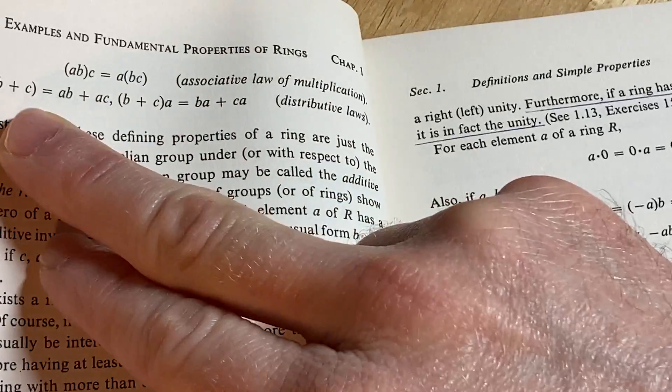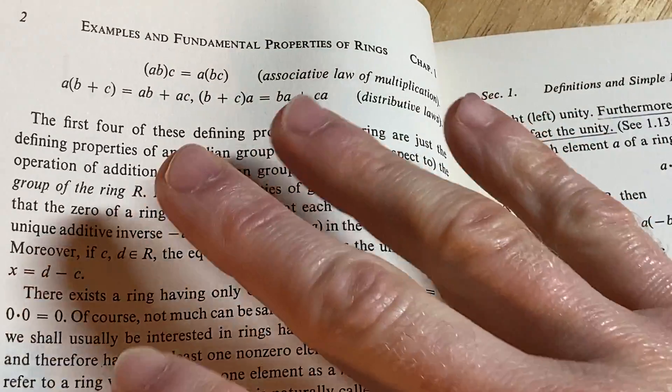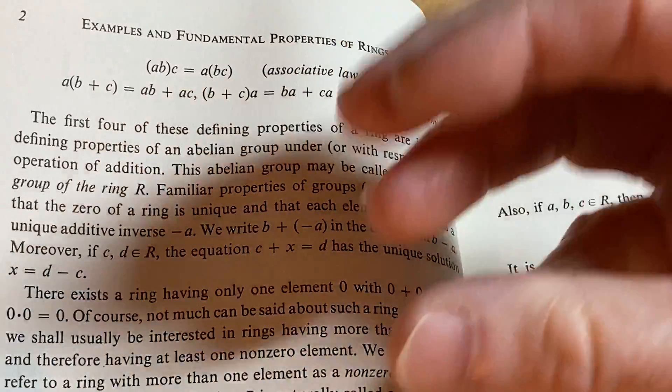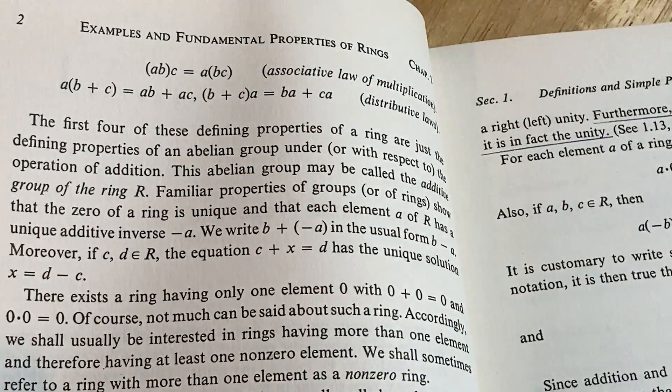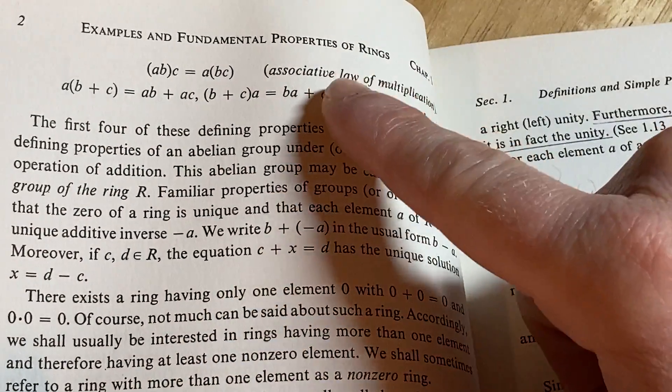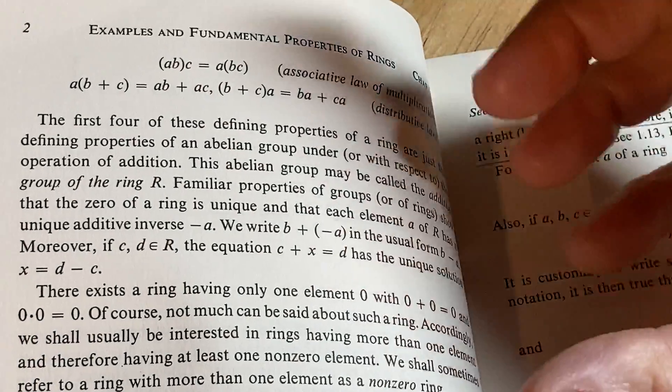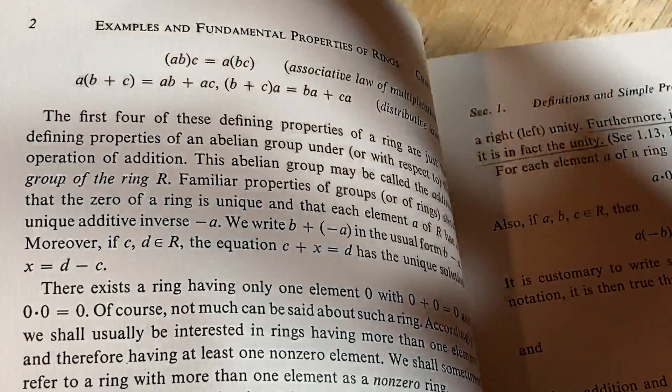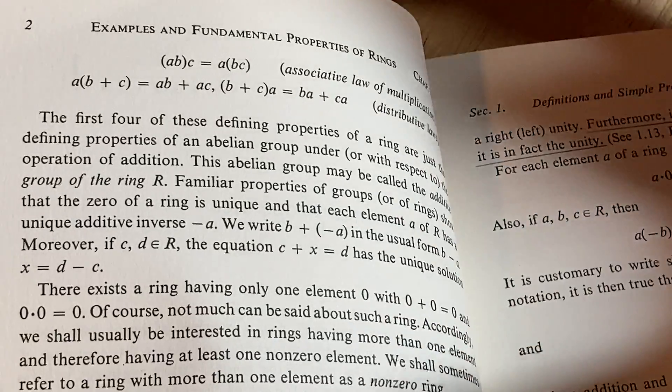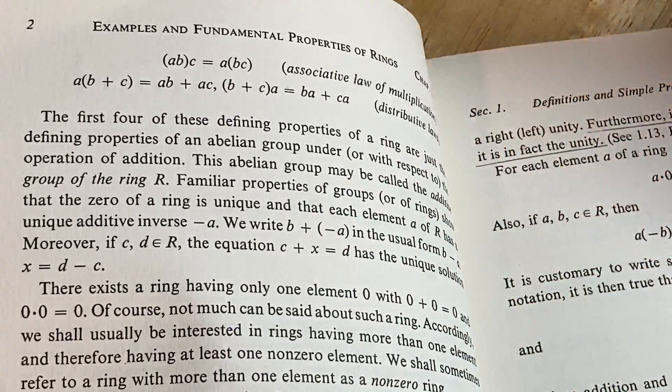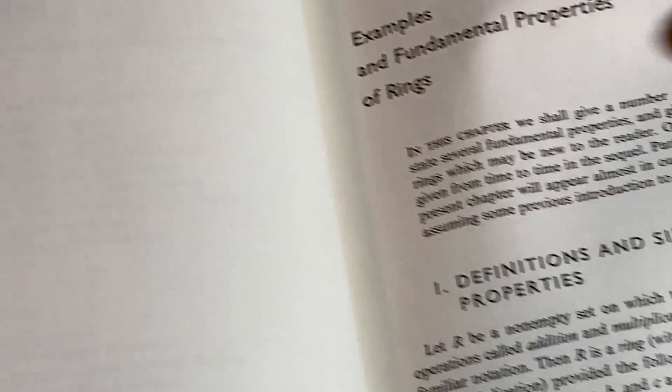Distributivity is important if you think about it, right? It's really what connects those two operations, right? Addition and multiplication. It's that distributive law. Also, notice that there's no requirement here for there to be an identity when we're thinking of multiplication or a multiplicative inverse.